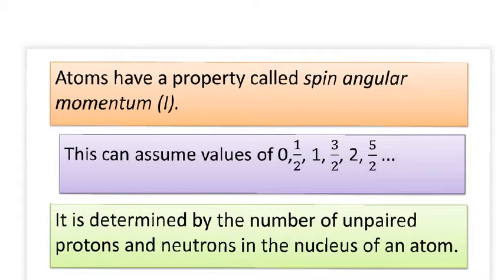If we just delve into the land of physics for a little bit, atoms have a property called spin angular momentum, and this can have certain values. You don't need to worry about how you work those values out, you just need to know that they can be certain values. So they can be 0, half, 1, 3 over 2, 2, 5 over 2, etc.